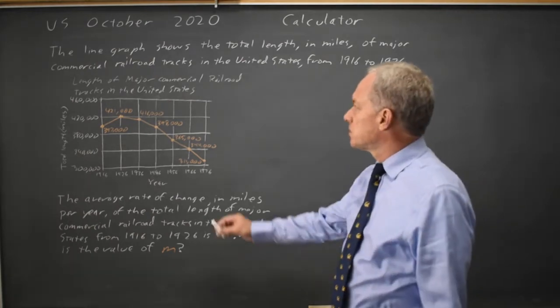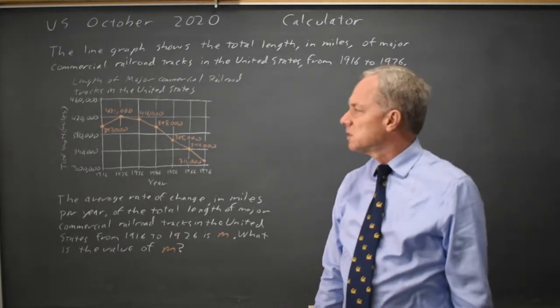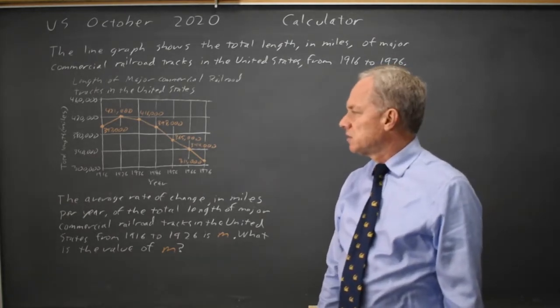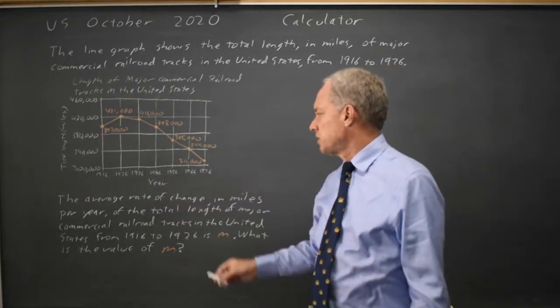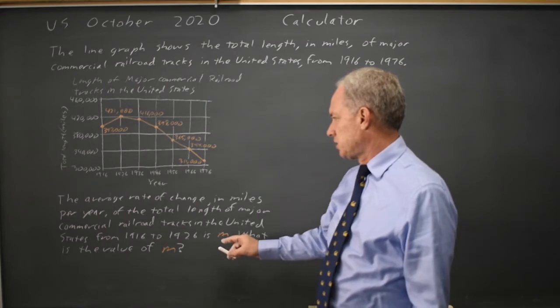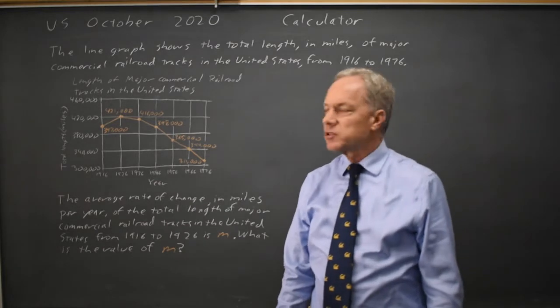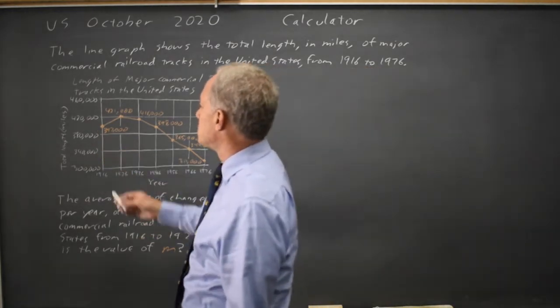The College Board gives us a graph of major commercial railroad miles in the United States every decade from 1916 through 1976, and they ask for the average rate of change from 1916 to 1926. The average rate of change between two points is the slope.